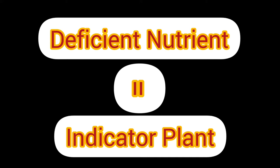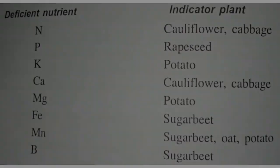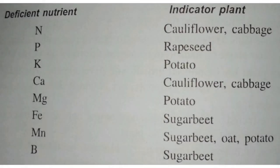Here we go. Nitrogen — if nitrogen is deficient, the indicator plants will be cauliflower and cabbage. Next, P — Phosphorus — the indicator plant is rapeseed. So if phosphorus is deficient, rapeseed is your indicator.